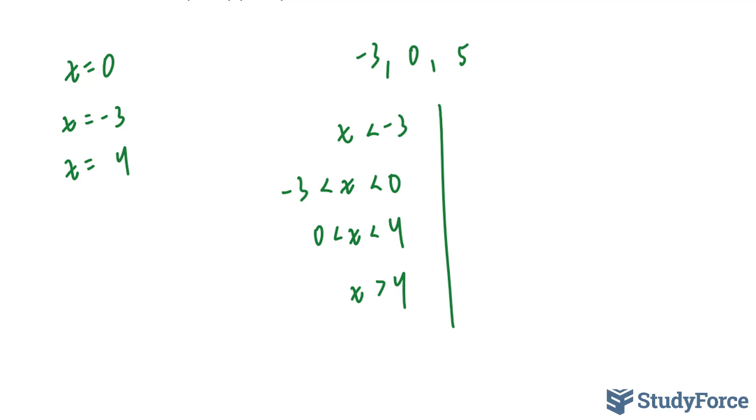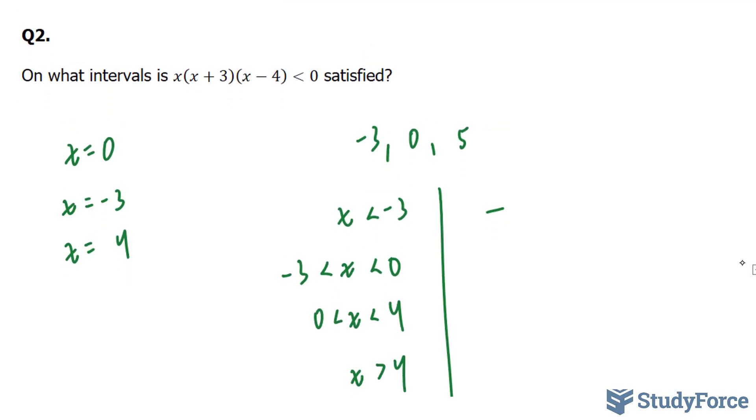If you choose a number that is less than -3, you'll end up with a negative answer. In other words, if I chose -5, plug it into here, into here, and into here, I would end up with a negative number, and any number less than -3.